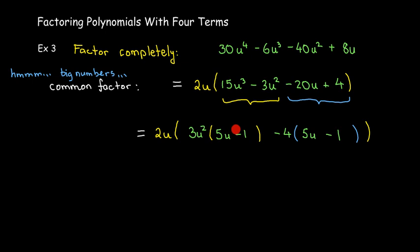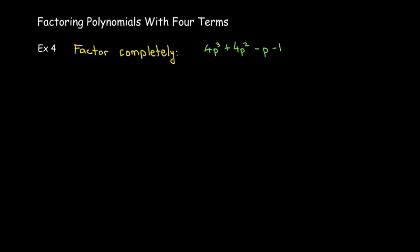I get my check. Inside the parentheses, I have 5u minus 1 from the first pair. From the second pair, 5u minus 1. That's one of my binomials. The other binomial will have terms 3u squared minus 4.